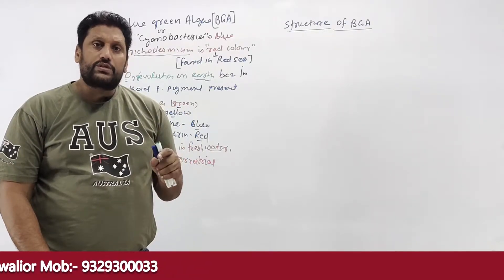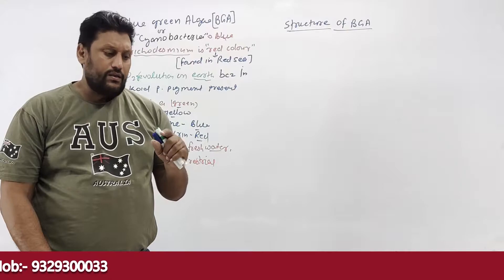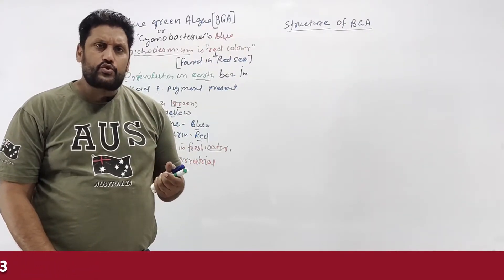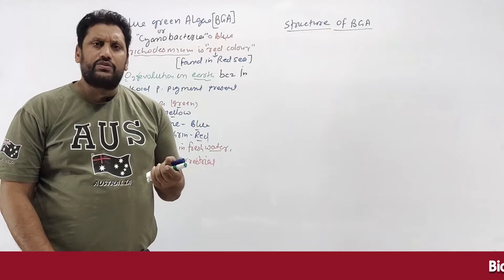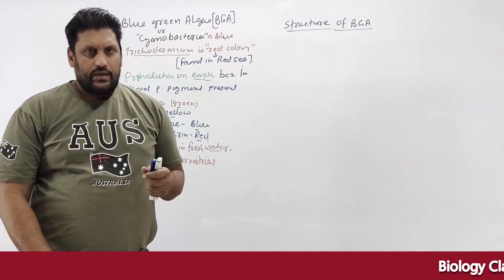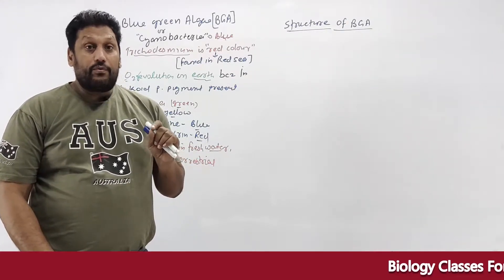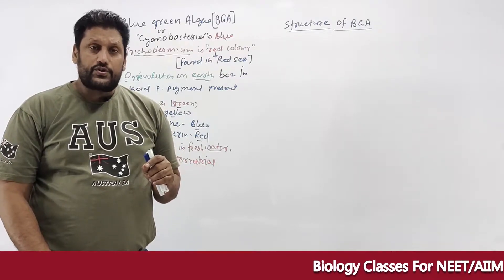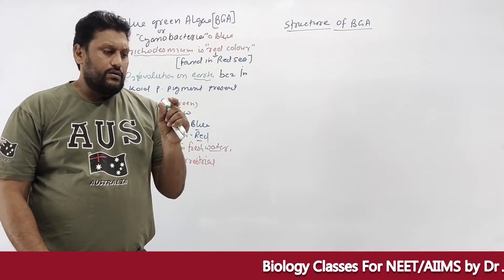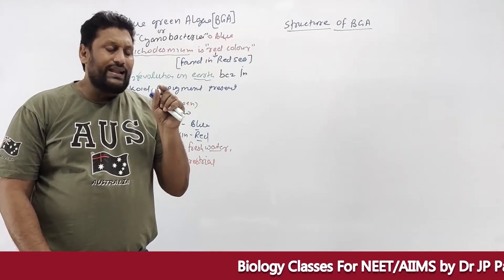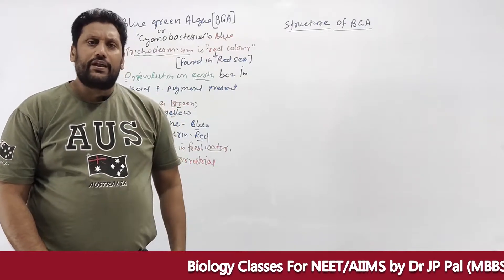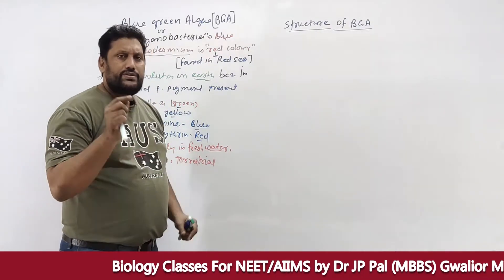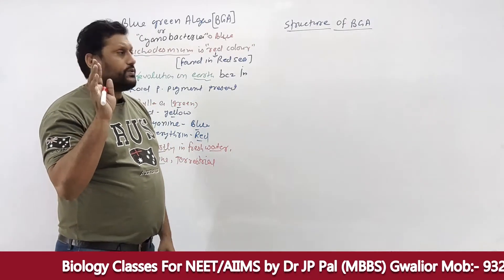BGA is prokaryotic — the nucleus has no nuclear membrane (nucleoid region). Ribosomes are present (70S type). Inclusion bodies serve as food storage, containing granules such as polyphosphate granules and glycogen granules.